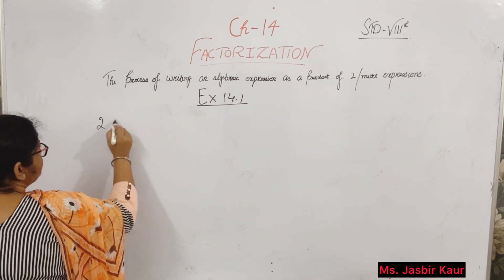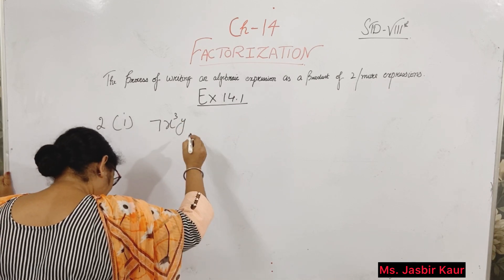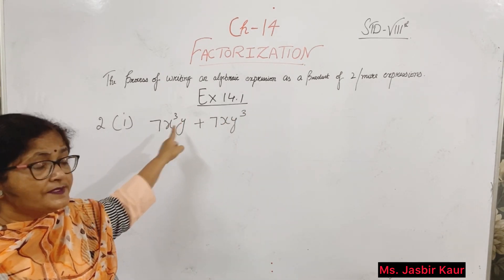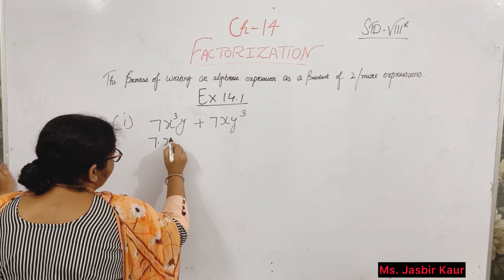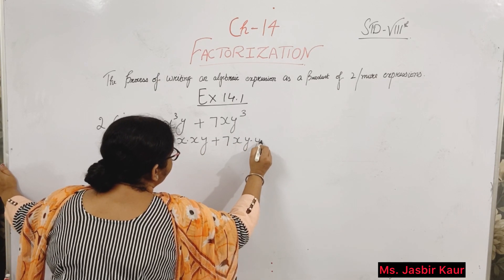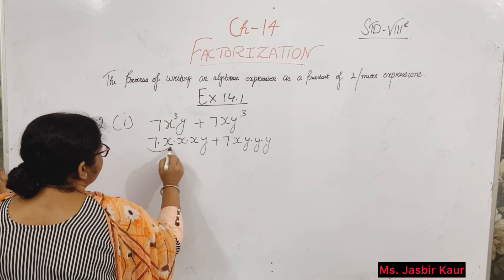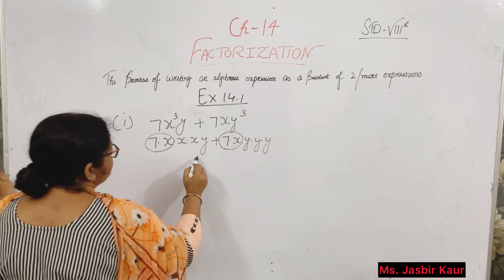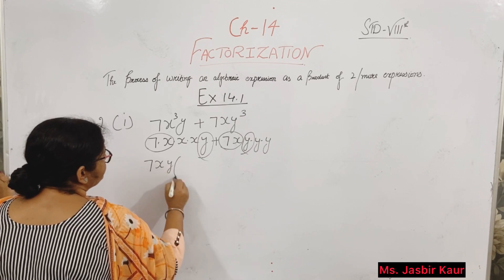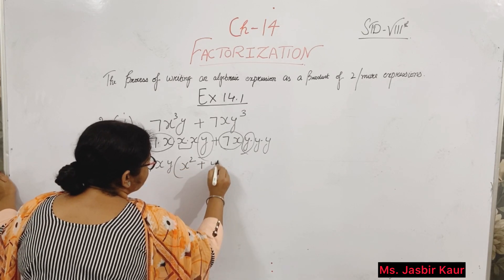Now second question: 7x cubed y plus 7xy squared. x cubed means x times x times x, and we have x times x times y. Common number is 7xy. So the answer is 7xy into (x squared plus y squared).